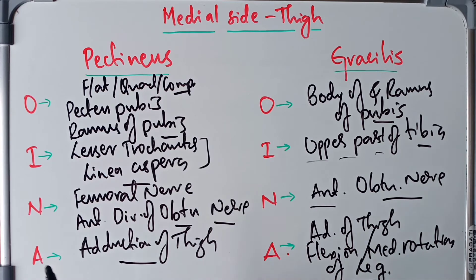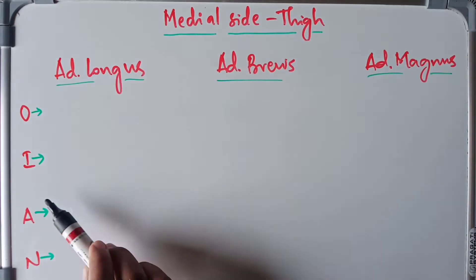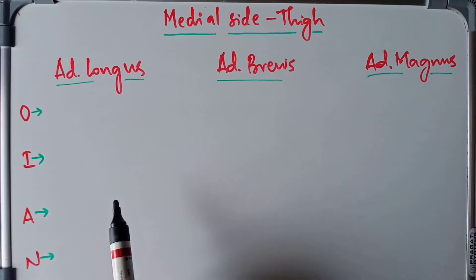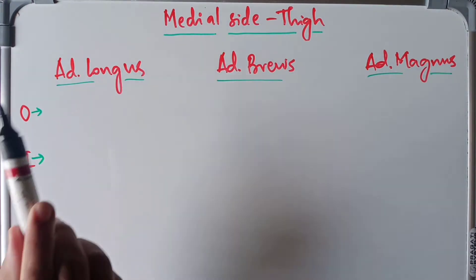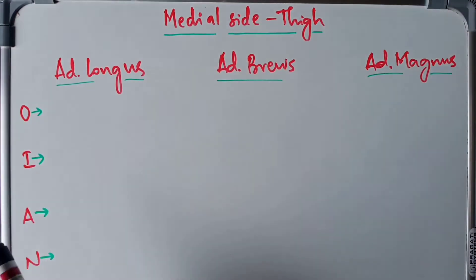Now we will look at the remaining three muscles of the medial compartment — the adductor longus, adductor brevis, and adductor magnus — in terms of their origin, insertion, action, and nerve supply.